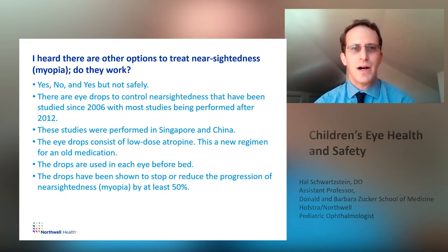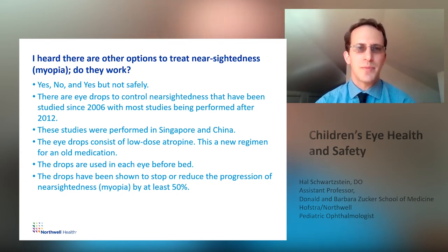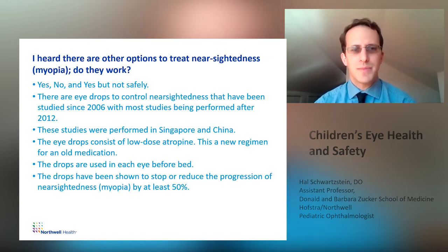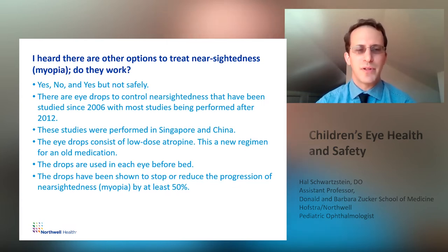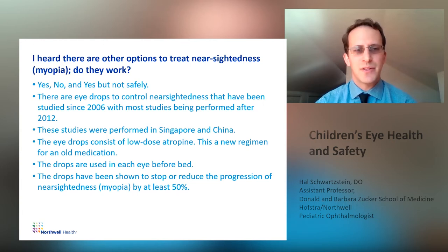The yes is that there are eye drops to control nearsightedness that have been studied since 2006, with most studies being performed after 2012. These studies were performed in Singapore and China. The eye drops consist of low-dose atropine. This is a new regimen for an old medication — atropine has been around for at least 30 years, the drops probably more than 45 years. The drops are used in each eye before bed and have been shown to stop or reduce the progression of nearsightedness or myopia by at least 50%.